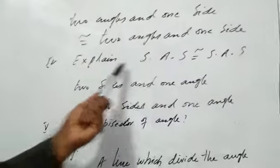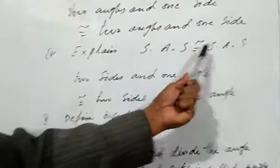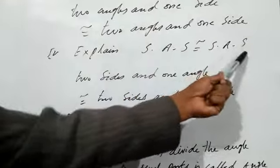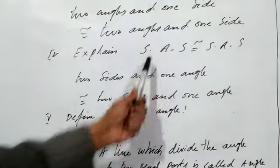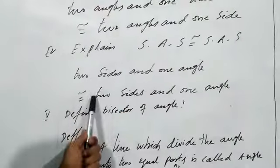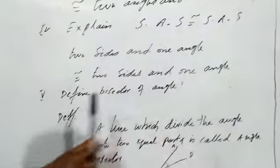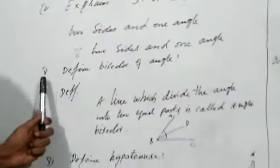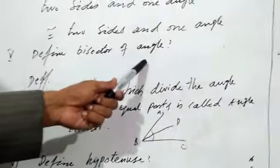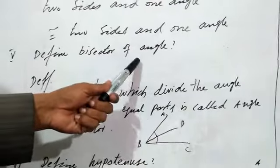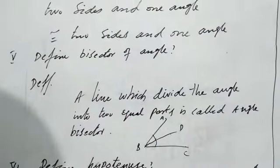The fourth part explains side-angle-side (SAS) congruence, meaning two sides and one angle congruent to two sides and one angle of another triangle. In the fifth part, we define the bisector of an angle — this is the definition of an angle bisector.